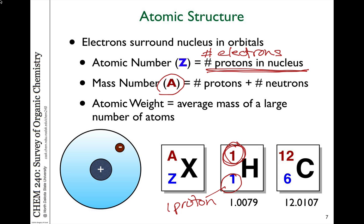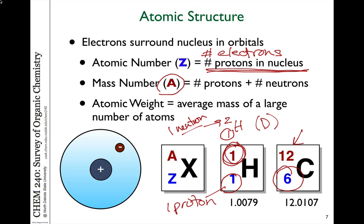Now there are isotopes. For example, hydrogen-2, or deuterium, has one proton but twice the mass. That additional mass comes from one neutron. It's very similar to hydrogen, but it's an isotope, which has a different number of neutrons. Carbon has an atomic number of six, which is six protons in the nucleus, and a mass of twelve. So there must be six neutrons as well, and with those six neutrons and six protons, there also have to be six electrons to make a neutral atom.